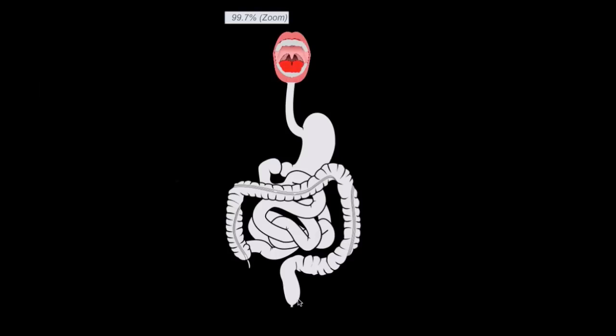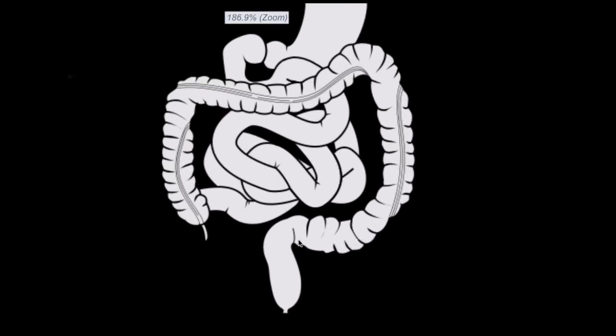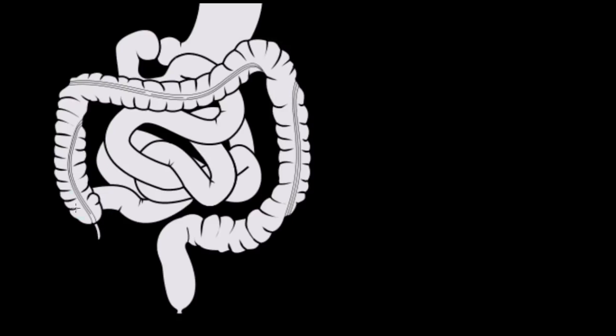Let's zoom in and focus on what happens after we absorb our food in the small intestine. Our food passes into the large intestine, as you can see here. Keep in mind, when we call it the large intestine, that does not mean it's the long intestine — it's actually shorter than the small intestine we just passed through. The end of the small intestine is the ileocecal valve, and that's the point where our large intestine begins.